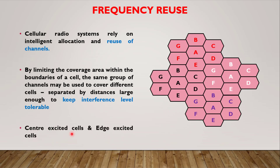Next we have center excited cells and edge excited cells. Center excited cells have a base station at the center of the cell, while edge excited cells have the base station located at the edges of the hexagonal cell. In edge excited cells, three different sectored antennas are used at three corners out of the six corners of the hexagonal cell, whereas in center excited cells we use an omnidirectional antenna at the center.